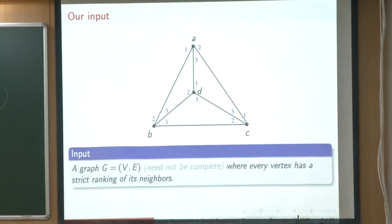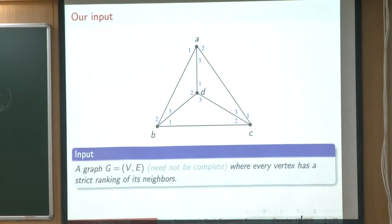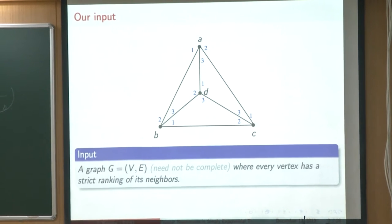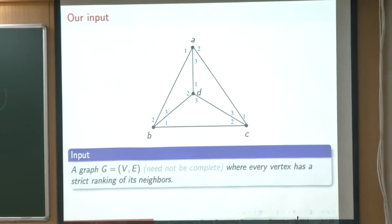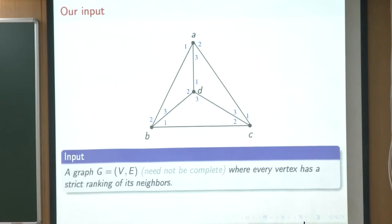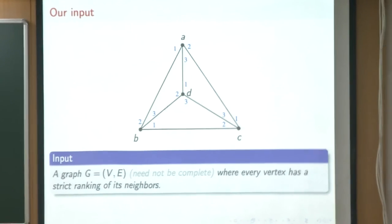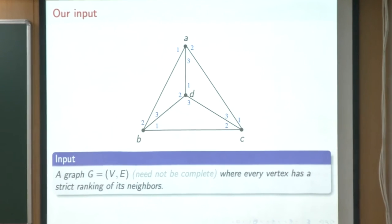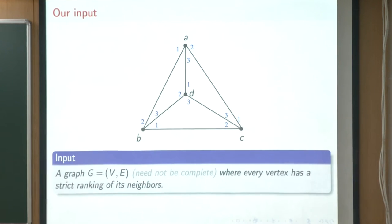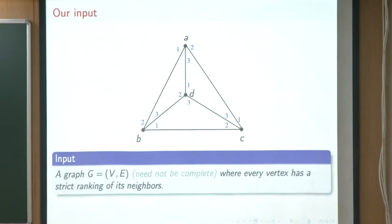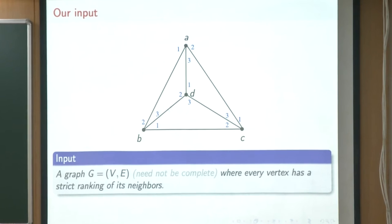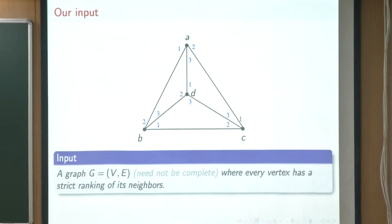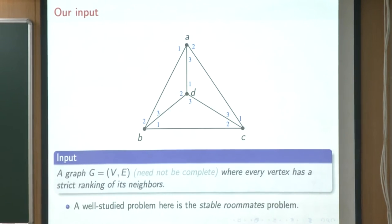A would very much like to share a room with B, but B has C as its top choice, C has A as its top choice, and nobody seems to want to share a room with D, though D has its own choices. That's our input and this is called a roommate instance, exactly from the application I described. We want to pair up people so they become roommates, and this is actually an old and well-studied problem.